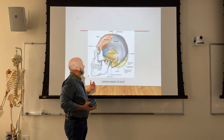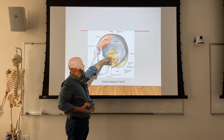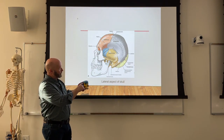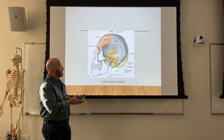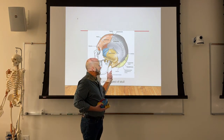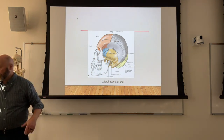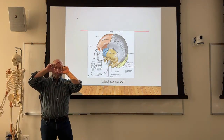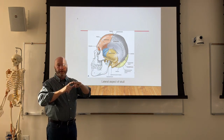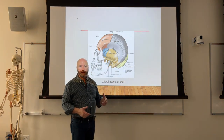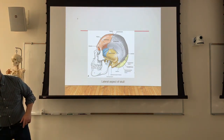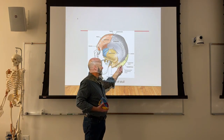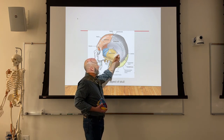Down where the sphenoid, temporal, frontal, and parietal bones all come together, we call that the squamosal suture. At the back, we have the lambdoidal suture — named because it's shaped like the Greek letter lambda, a loosely triangular shape. The lambdoidal suture joins the occipital bone to the temporal bone and the parietal bone.